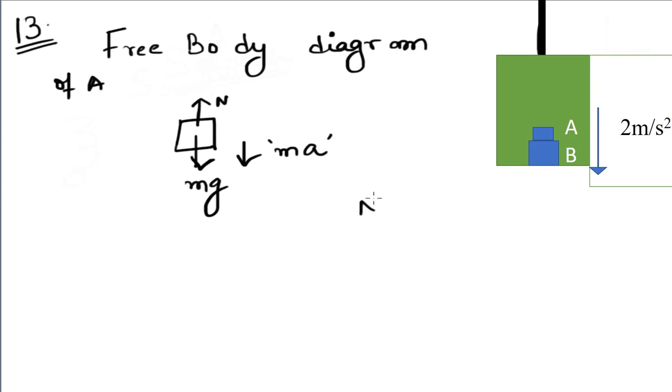Now, writing equations of motion. Normal minus mg, that is N minus mg equals minus ma, as we have assumed downward direction to be negative.